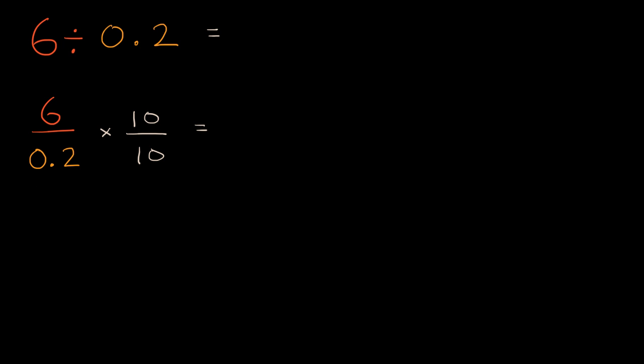So this is going to be equal to 60 over two-tenths times 10. That's gonna move the decimal one to the right, and that's just going to be equal to 2. Now, what is 60 divided by 2? Well, 60 divided by 2 is fairly straightforward. 6 divided by 2 is 3, so 60 divided by 2 is going to be equal to 30. So that's 30, and we're done.